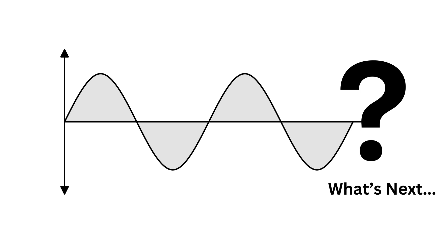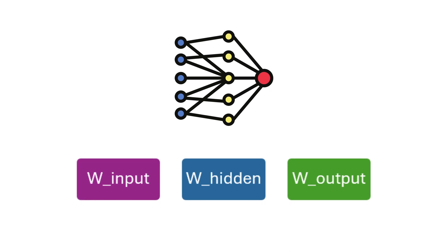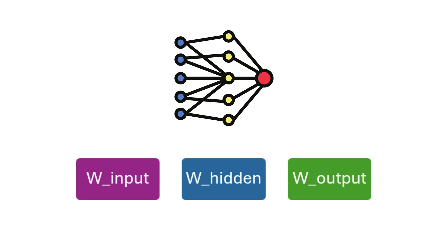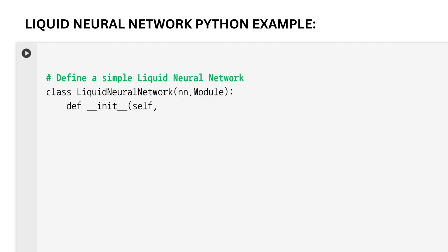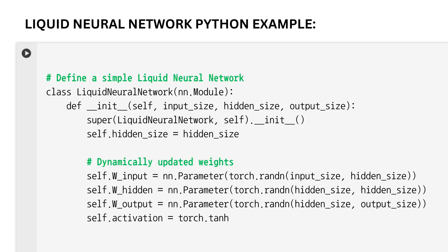There are a couple of key components. First is the input weight matrix connecting input to the hidden state. Next is w_hidden — the weight matrix for the hidden state to the next hidden state, which captures the liquid dynamics. Then w_output — the weight matrix connecting the hidden state to the output. For the activation function, we are going to use tanh, which introduces non-linearity to our model.